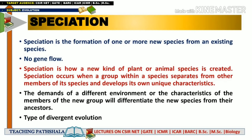Interbreeding is one of the most important factors that should be present between members of the same species group. But because there is reproductive isolation, we say they are now two distinctive species — though the new type of species has formed from the existing species. As mentioned, speciation is how a new kind of plant or animal species is created. Speciation occurs when a group within a species separates from other members and develops its own unique characteristics.